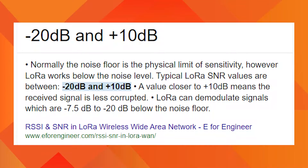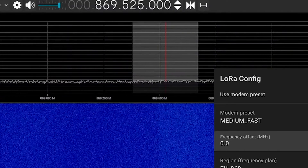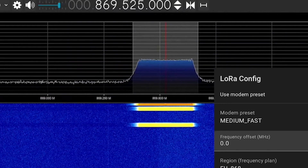The speciality of a LoRa transceiver is that it can understand signals much below the noise floor — it can pick signals from the noise. Typical values of Meshtastic LoRa SNR are between -20 dB and +10 dB.